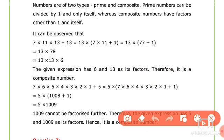And then, the second number is 7 × 6 × 5 × 4 × 3 × 2 × 1 + 5. Now we have 5 × (7 × 6 × 4 × 3 × 2 × 1 + 1).